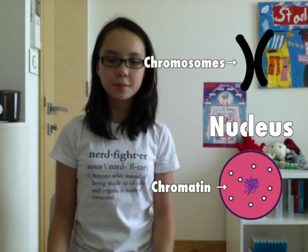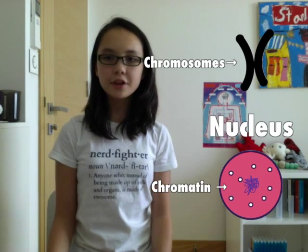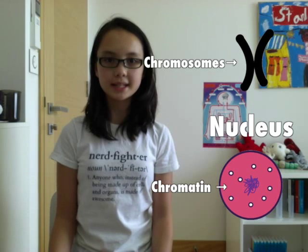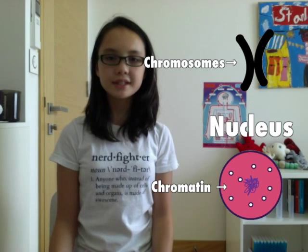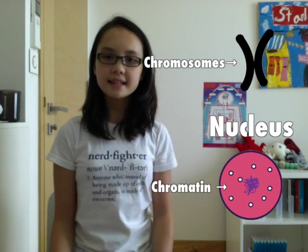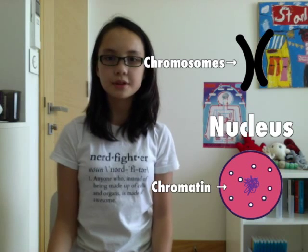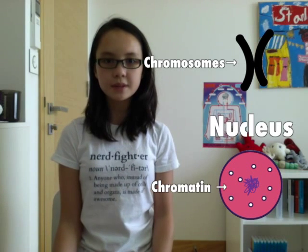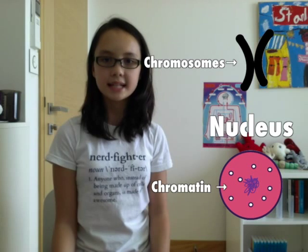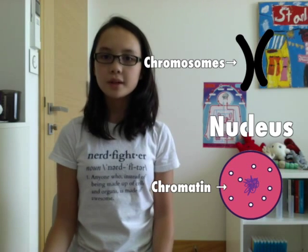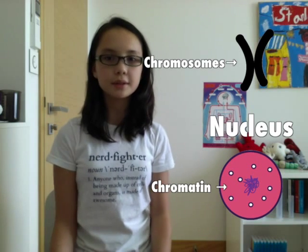Nuclear pores help to block certain molecules while letting molecules like DNA and RNA pass through. Inside the nucleus, there are chromatin and chromosomes. In every human cell nucleus, there are around 2 meters of DNA. This is divided into 46 molecules, which makes each chromosome around 4 centimeters long. The chromosomes are mixed with other proteins to create chromatin, a dense fiber, which is then stored in the nucleus.